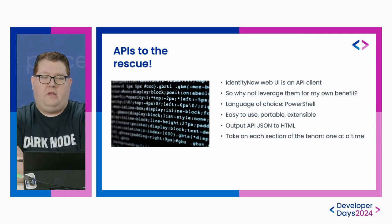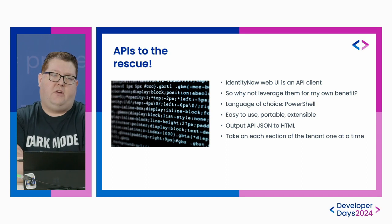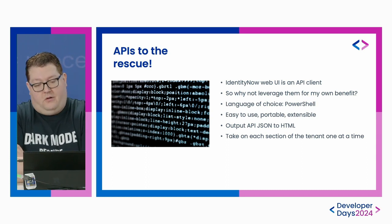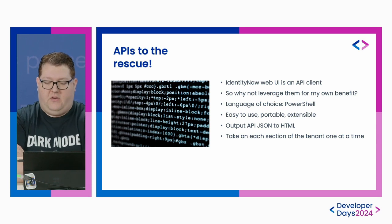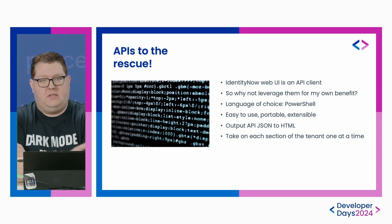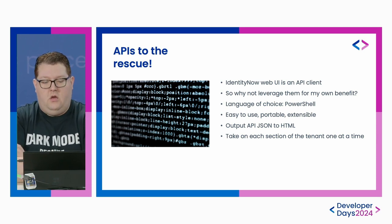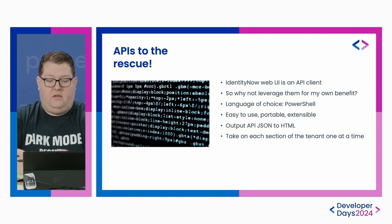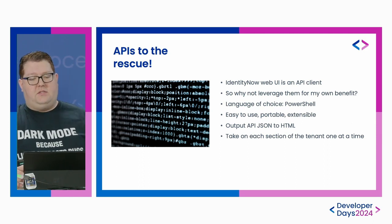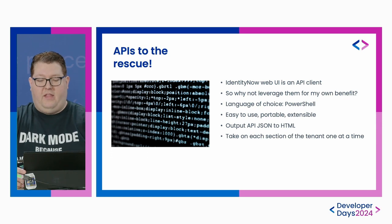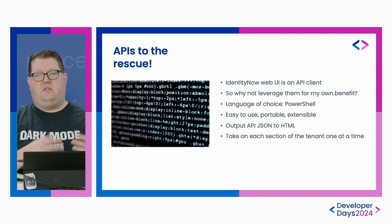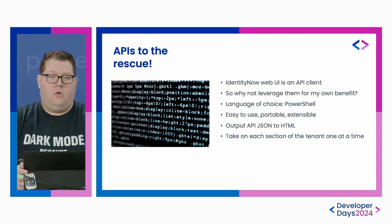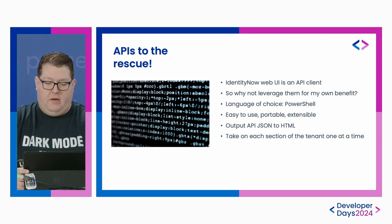That's where the APIs come to the rescue. The SailPoint APIs for IdentityNow are kind of a first-class citizen — IdentityNow is just a client of the API itself on the back end. So anything we can see in the tenant configuration, we can just pull it via API. I said, let's just take those APIs and leverage them to make life easier, because if I can spend more time automating, that leaves more time for addressing client needs.